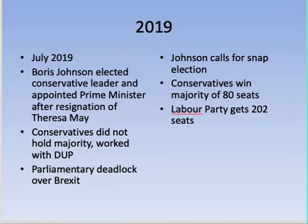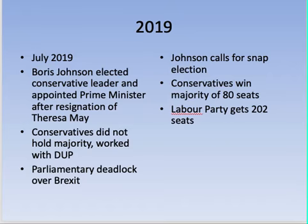In 2019, after Theresa May stepped down, Boris Johnson was elected as Conservative leader and prime minister. Conservatives didn't hold the majority but worked with the DUP as parliament worked through Brexit. Johnson also called a snap election; Conservatives won the majority and more seats, while Labour got about 202 seats. Parliament normally operates on a five-year cycle, but the prime minister can call for early reelection — especially during ongoing negotiations — sometimes strengthening their party, sometimes weakening it.